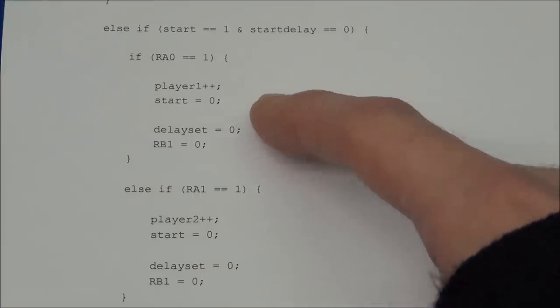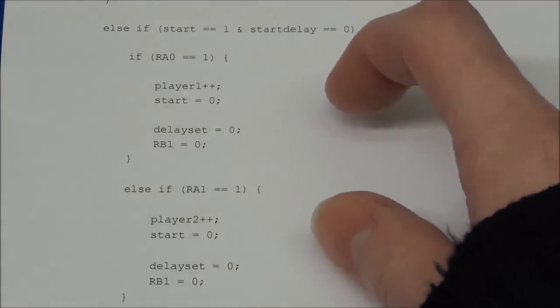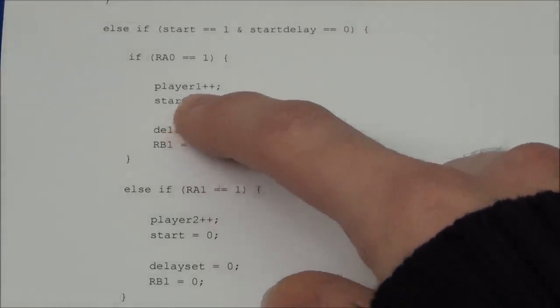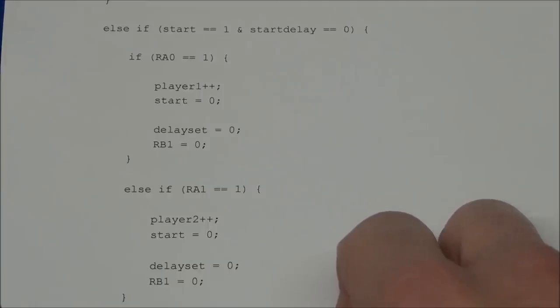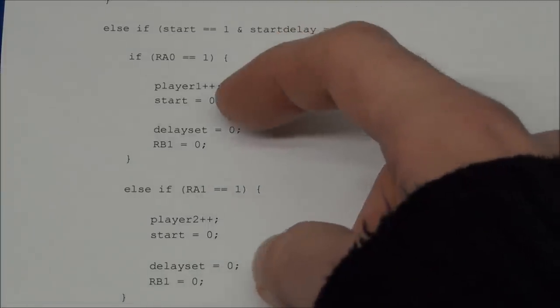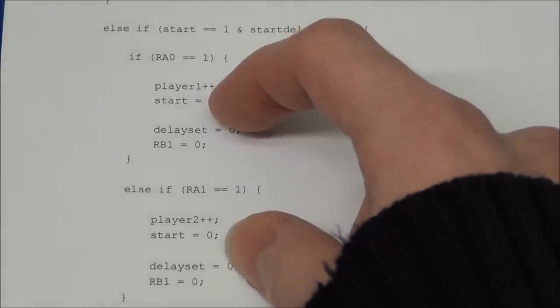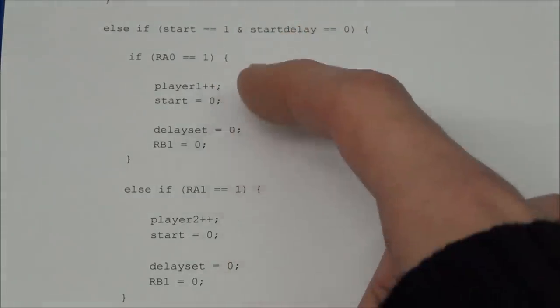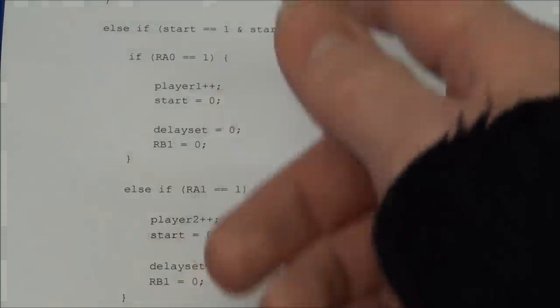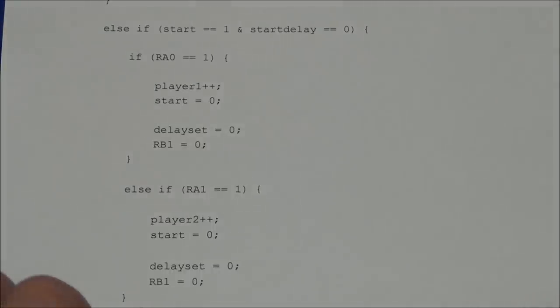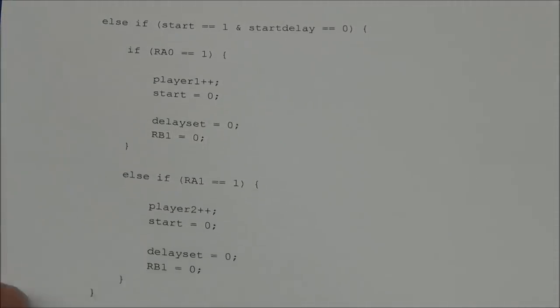And of course if both players press the button at exactly the same time, then I am afraid player 1 will get the point. And there is nothing we can do about that really. We could of course check up here if player 2 has pressed the button as well, but there is no really any reason to do that because this is so fast that it is impossible to press the buttons at the same time.